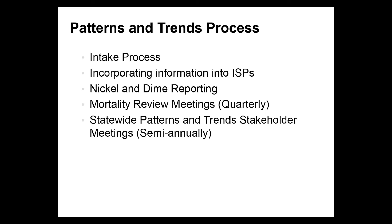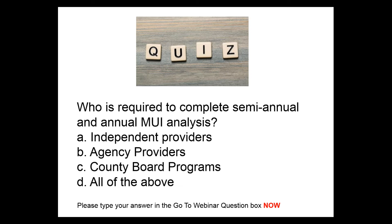Everyone get your fingers on your keyboard — we're going to have a quiz. Who is required to complete semiannual and annual MUI analysis? A) Independent providers, B) agency providers, C) county board programs, or D) all of the above. The answer is D — all of the above. Independent providers, agency providers, and county board programs are all required. Excellent job — I only saw one wrong answer.